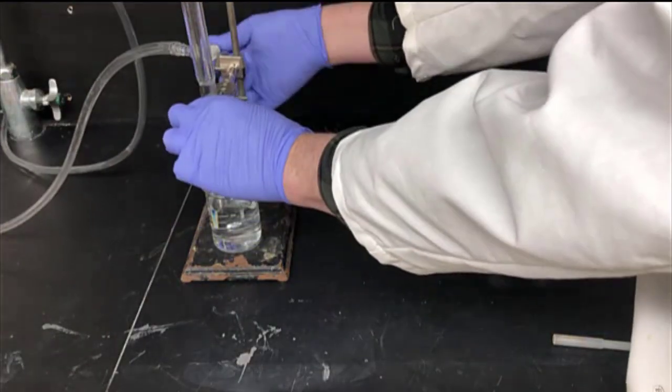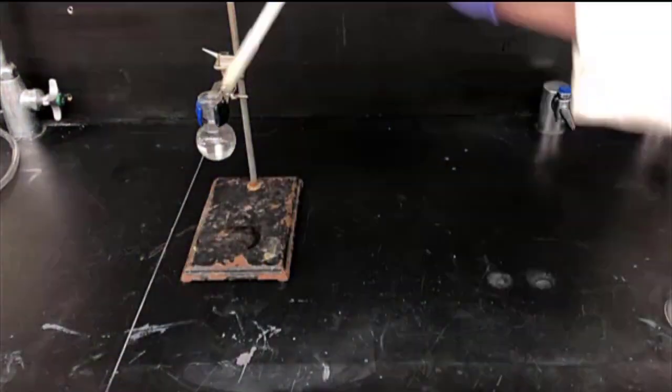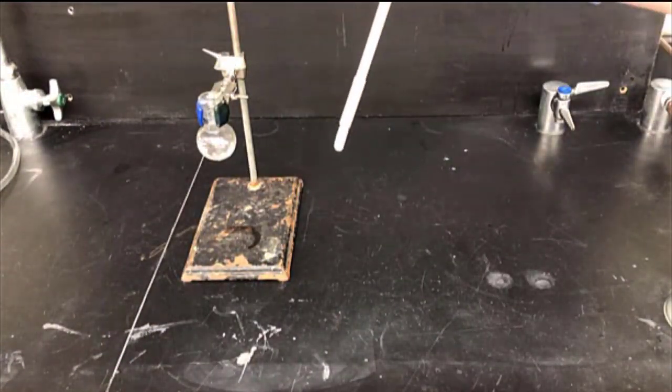When the reaction is cooled, you can remove the condenser and then retrieve the stir bar using this magnetic stir bar retriever. Essentially, this is just a magnet on a stick. This will allow you to pluck the stir bar out.